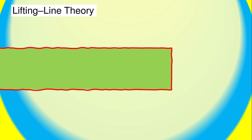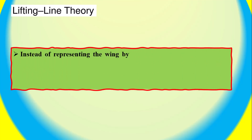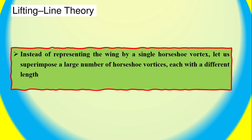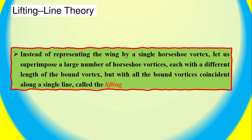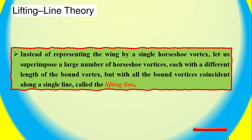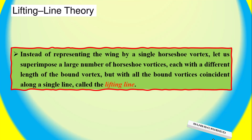Lifting line theory: instead of representing the wing by a single horseshoe vortex, let us superimpose a large number of horseshoe vortices, each with a different length of the bound vortex, but with all the bound vortices coincident along a single line called the lifting line.